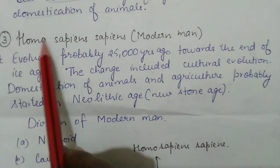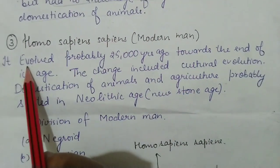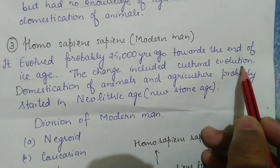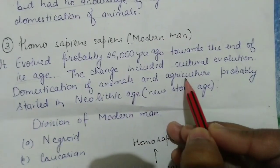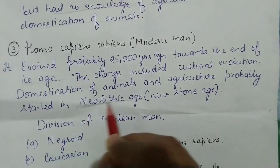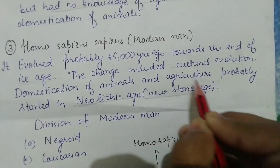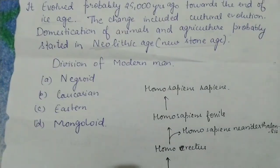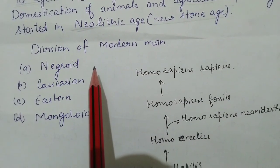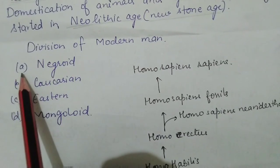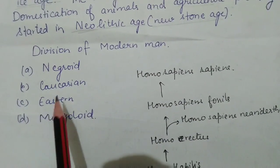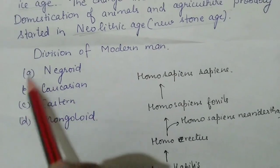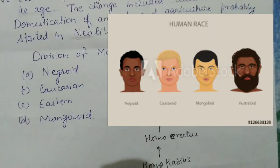The last is Homo sapiens sapiens, also known as modern man, which evolved around 25,000 years ago towards the end of the ice ages. They had cultural evolution and started domestication of animals and agriculture in the New Lithic Age, also known as the New Stone Age. Modern man is divided into four types based on geographical conditions: Negroid, Caucasian, Eastern, and Mongoloid.